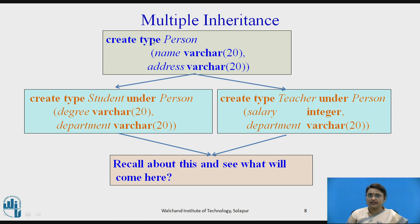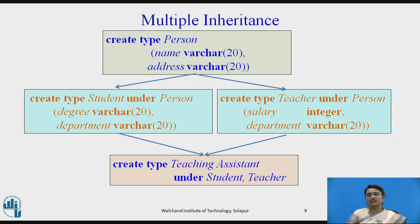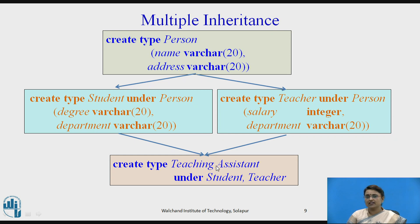Diagrammatically, we create a type Person with name and address. Student and teacher are sub types of person — that is single inheritance. Now both student and teacher are inherited into teaching assistant. The keyword UNDER is used for inheritance in SQL. So student and teacher become the super types for teaching assistant, and teaching assistant becomes the sub type — this is multiple inheritance applied here.